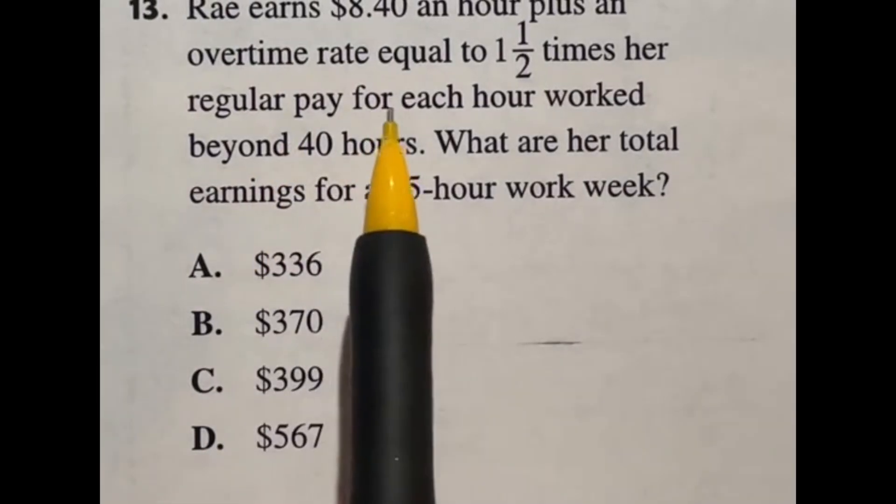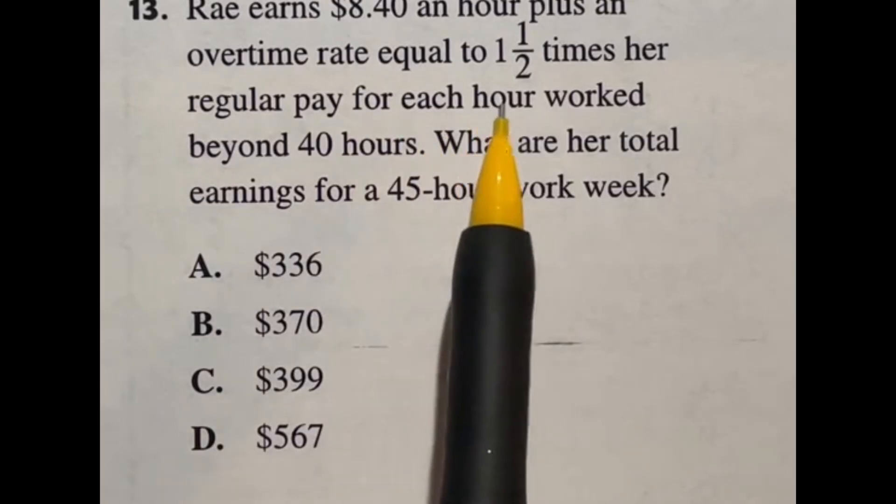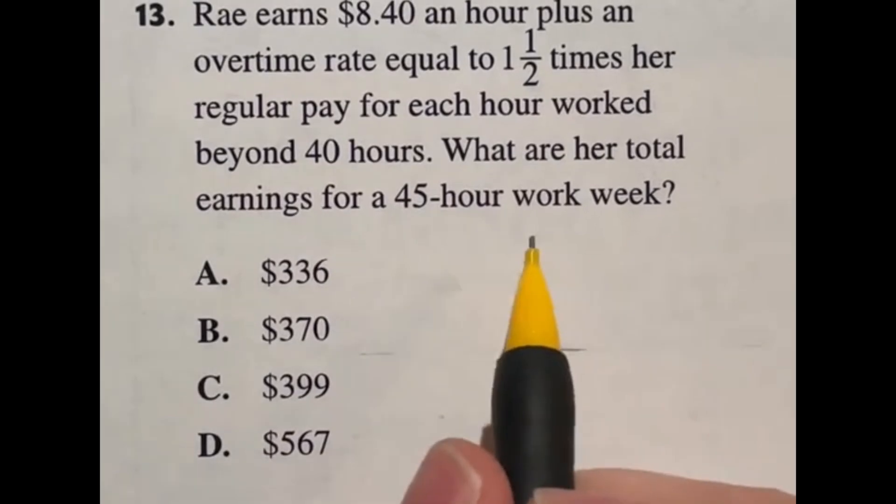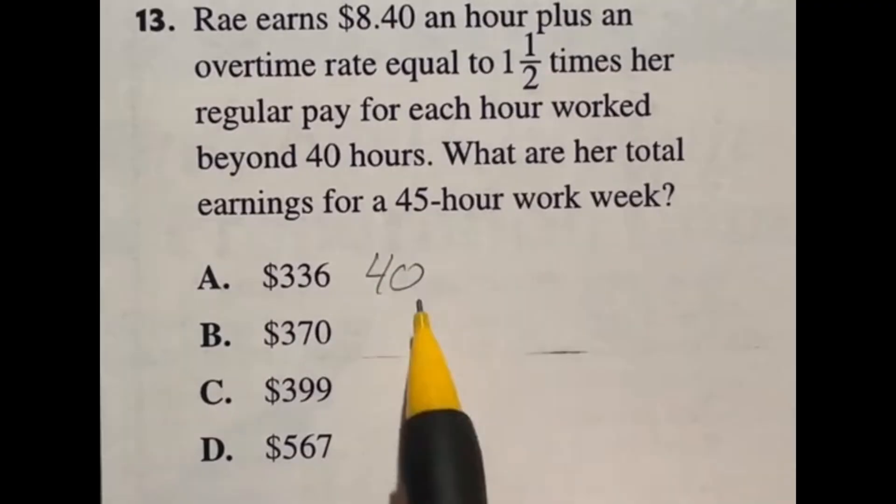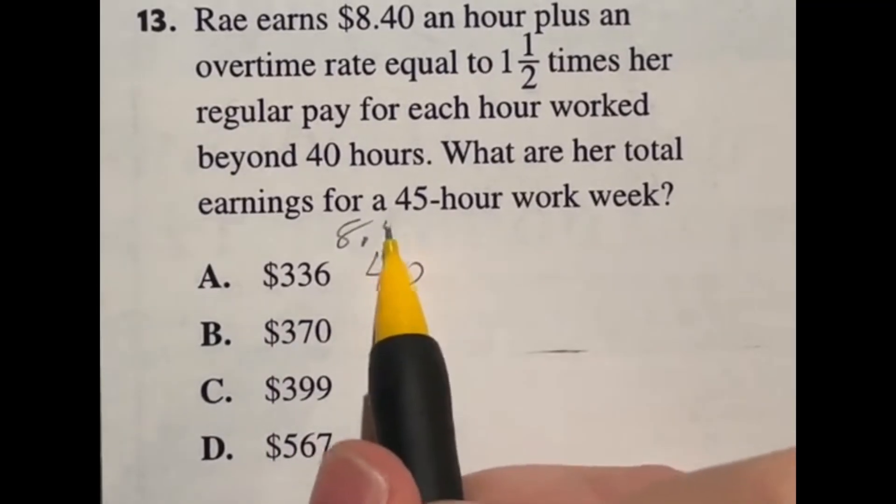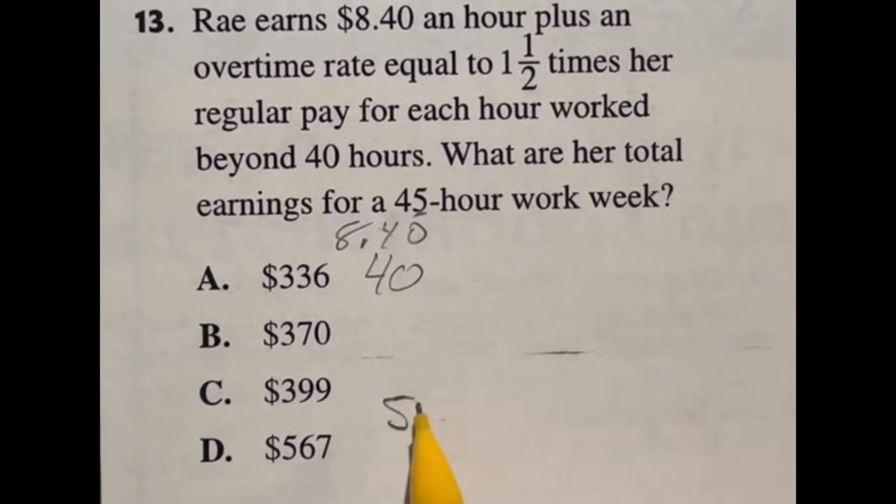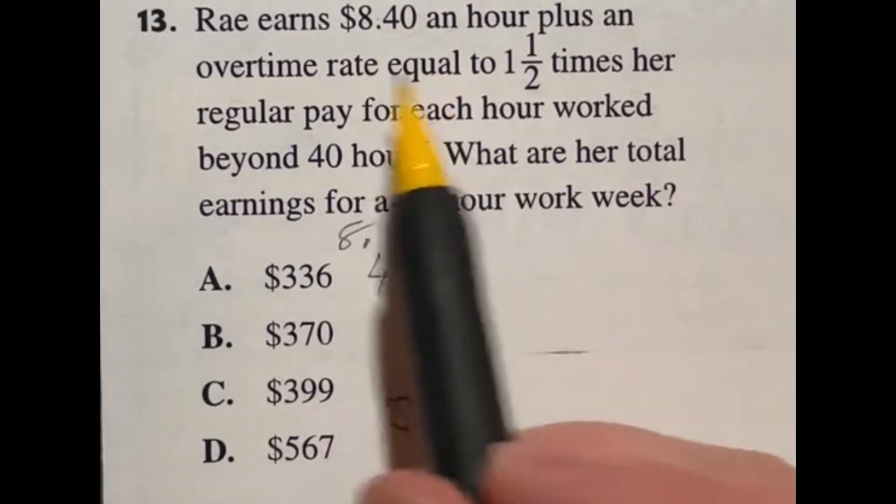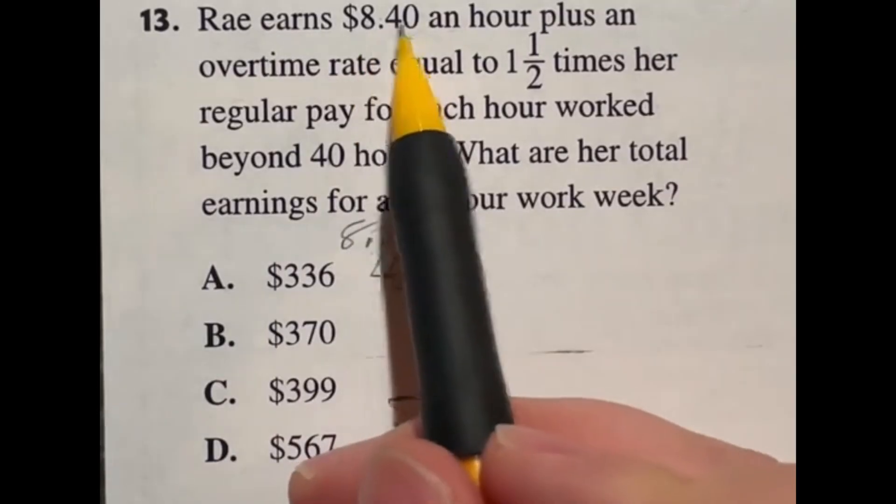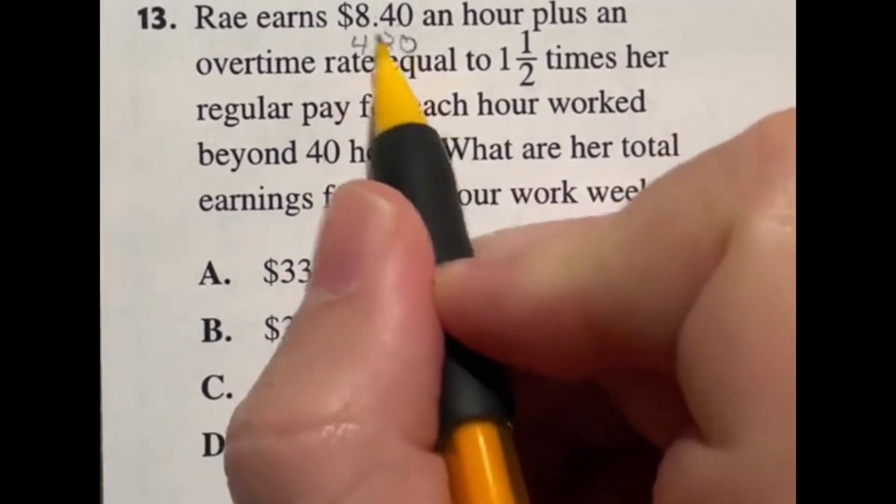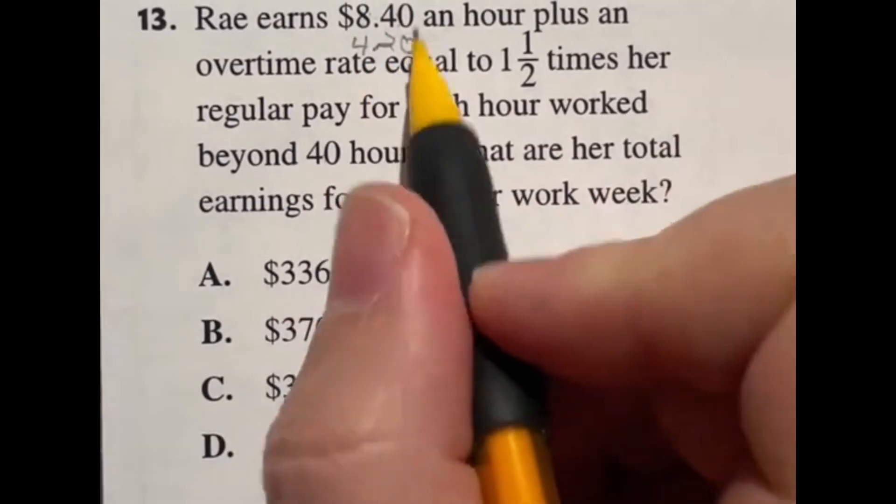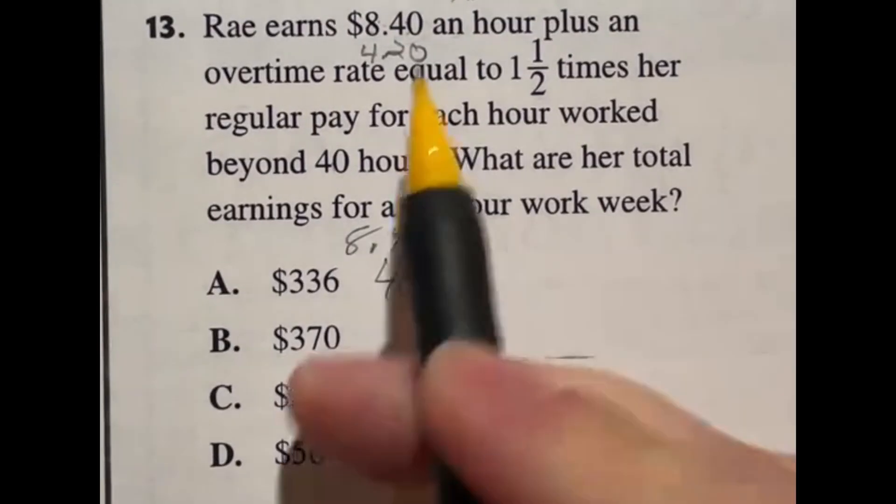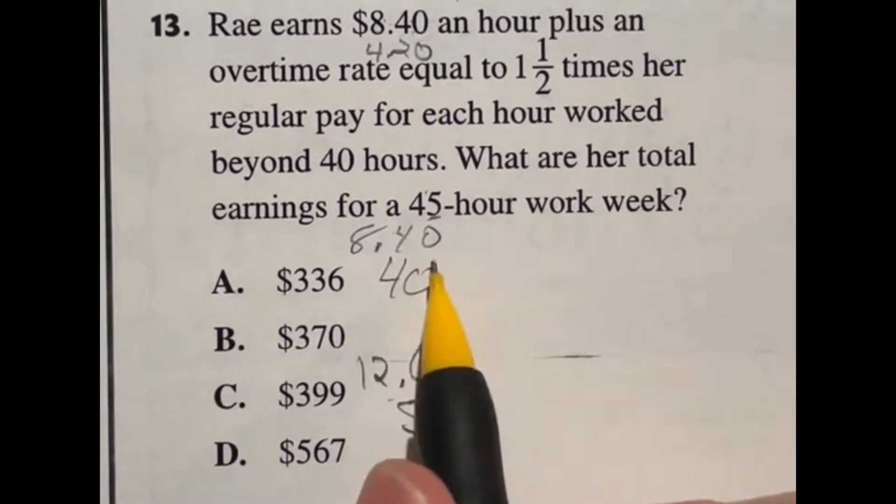Some basic math skills here. It says Rae earns $8.40 an hour plus an overtime rate equal to one and a half times her regular pay for each hour worked beyond 40 hours. What are her total earnings for a 45 hour work week? So we got the first two things here. 40 hours at $8.40 an hour. Then we have another five hours where she's making time and a half. Now, what is time and a half? You take this plus half of this back to it because you make more money once you go over the 40 hours. So what would be this plus half of this? Well, half of it right off the bat would be $4.20 because cut eight in half, you get four, cut four in half, you get two. So what would this new rate be for the overtime? Well, 40 cents plus 20 cents gives me 60 cents. And eight plus four is going to give me 12. So we have two things here and we're going to add them together.